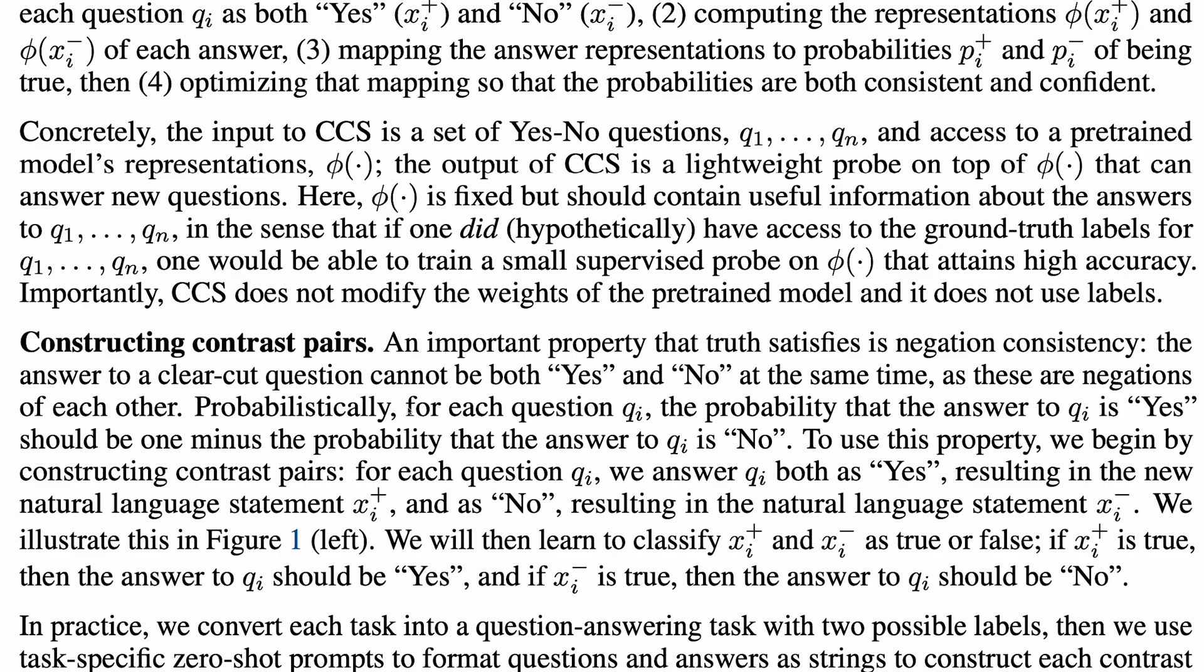In probability terms, for each question qi, the probability that the answer to qi is yes should be 1 minus the probability that the answer to qi is no.